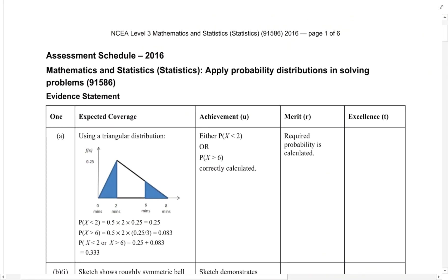So, it was for merit and you just had to get the right answer. If you got either the left hand region, that's the less than two region or the right hand region, that's the more than six region, then you got achievement credit.